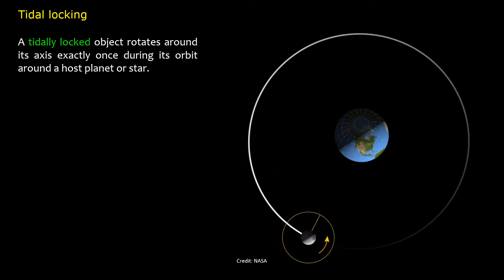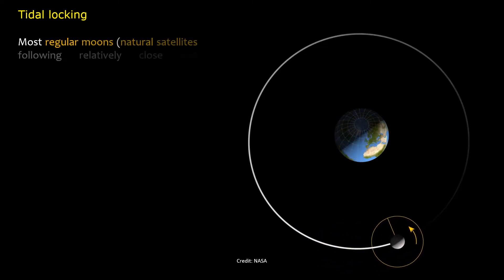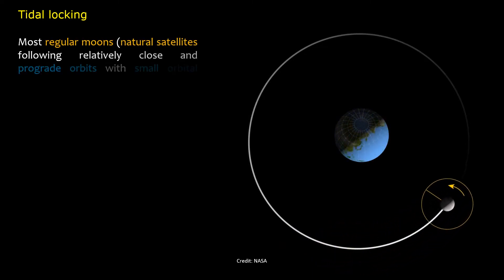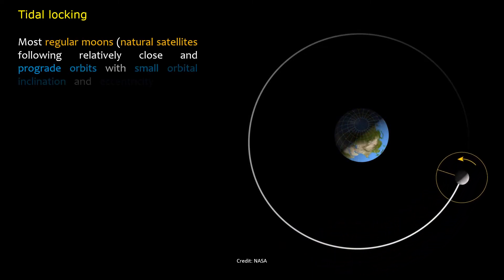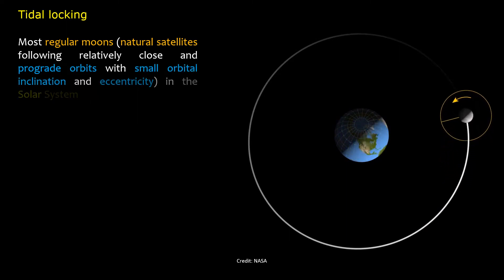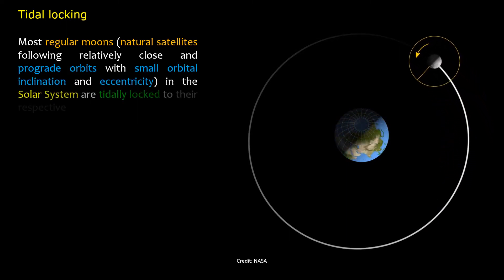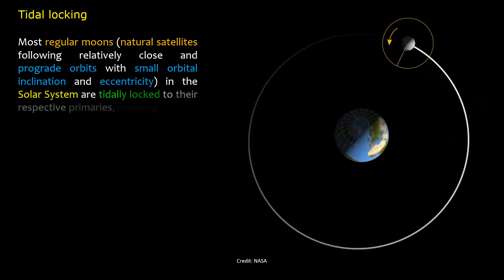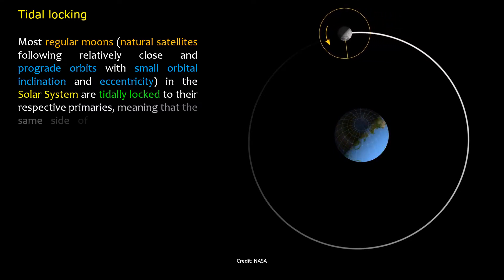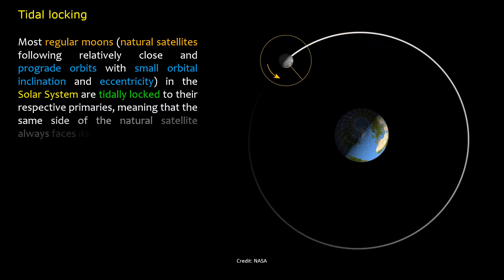Most regular moons — natural satellites following relatively close and prograde orbits with small orbital inclination and eccentricity — in the solar system are tidally locked to their respective primaries, meaning that the same side of the natural satellite always faces its planet.